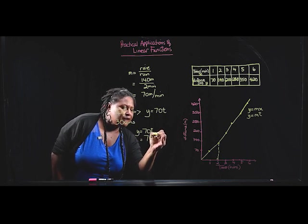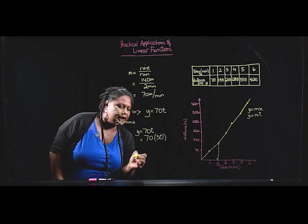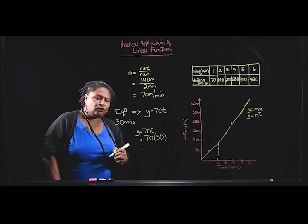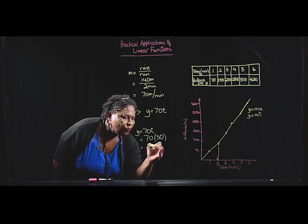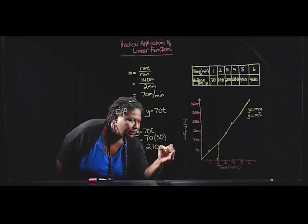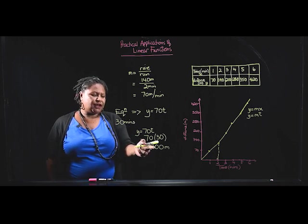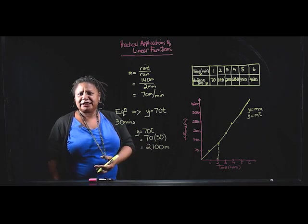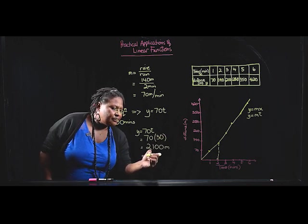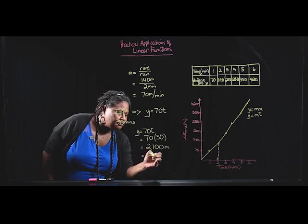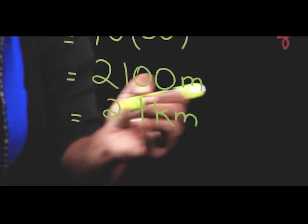We substitute this into the equation. So, 70 multiplied by the time of 30 minutes. And total distance will be equal to 2,100 meters. So, in 30 minutes, she's going to cover 2,100 meters. That's in meters. If you convert this to kilometers, Mary would have run 2.1 kilometers.